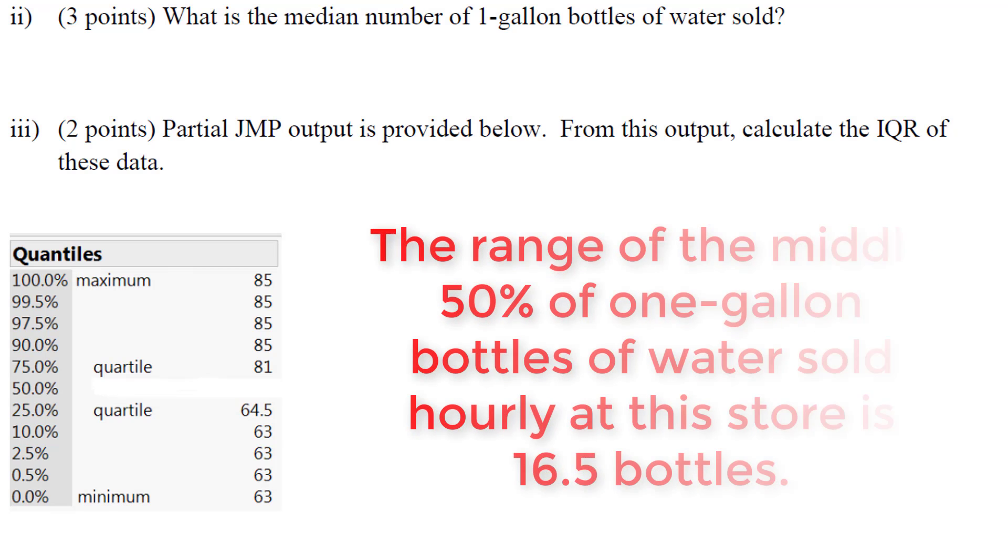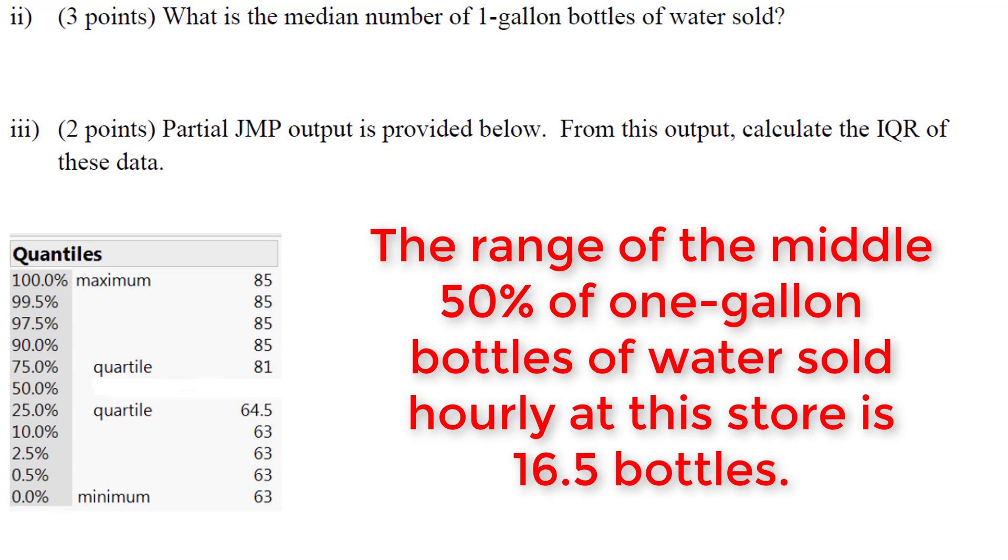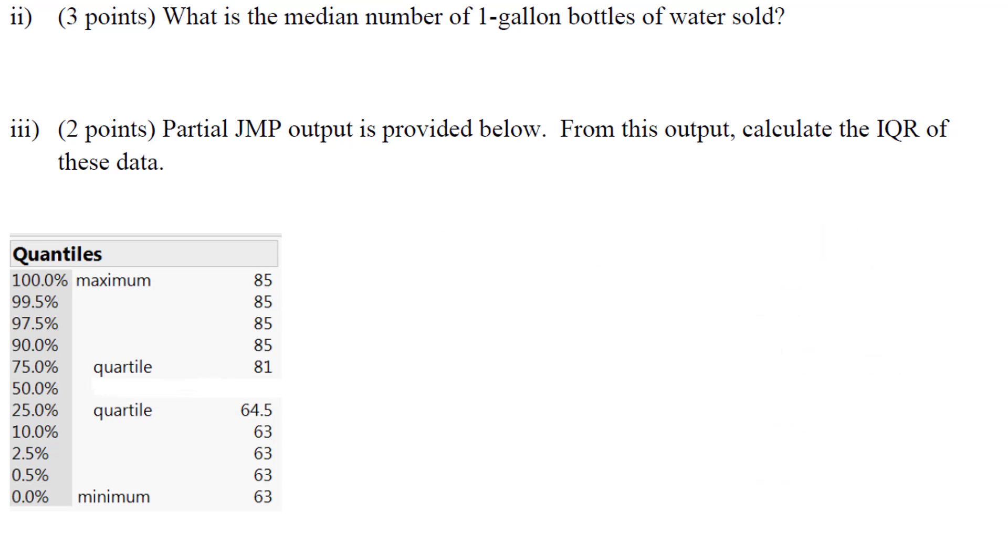Interpreting this value would be the span of the middle 50 percent of one gallon bottles of water sold from the store hourly is 16.5. It's just the distance between the two numbers.